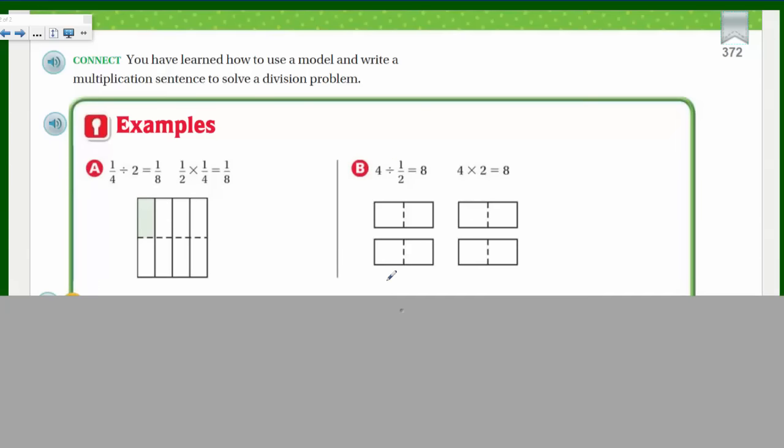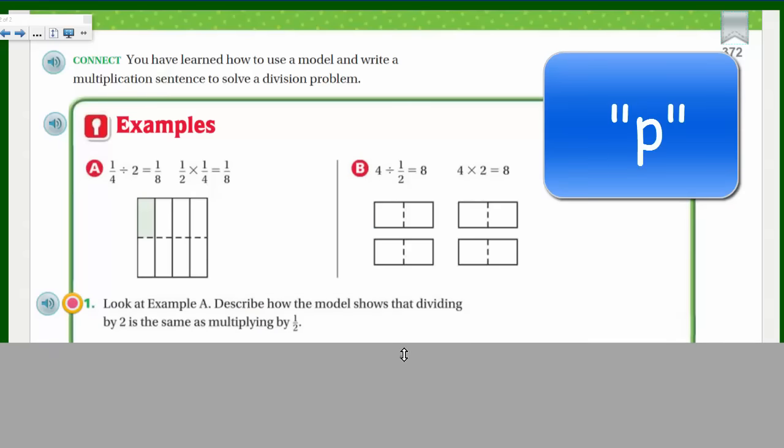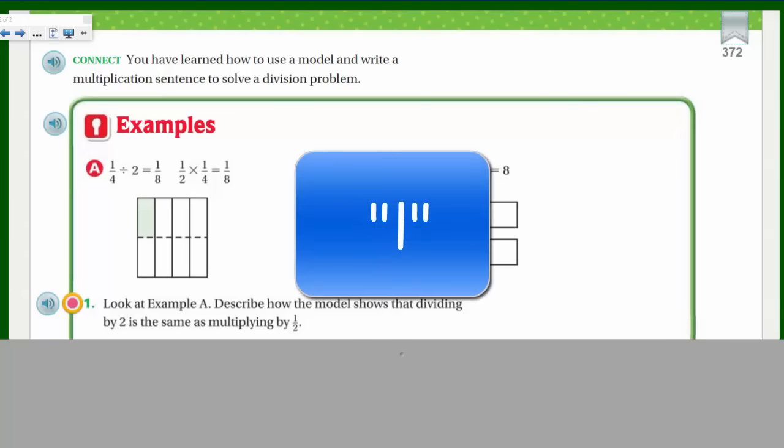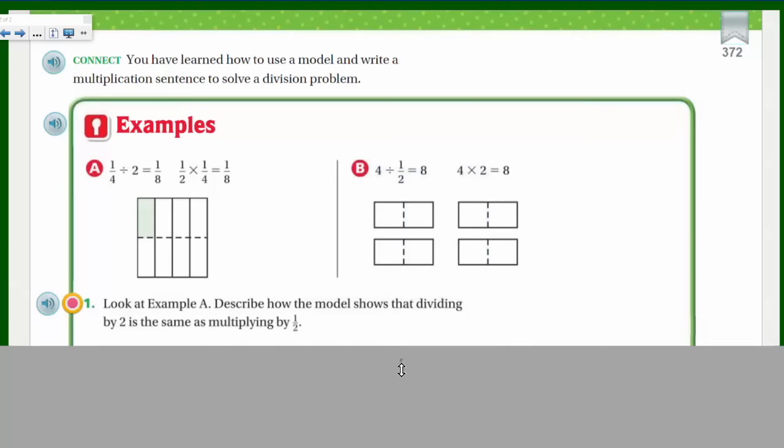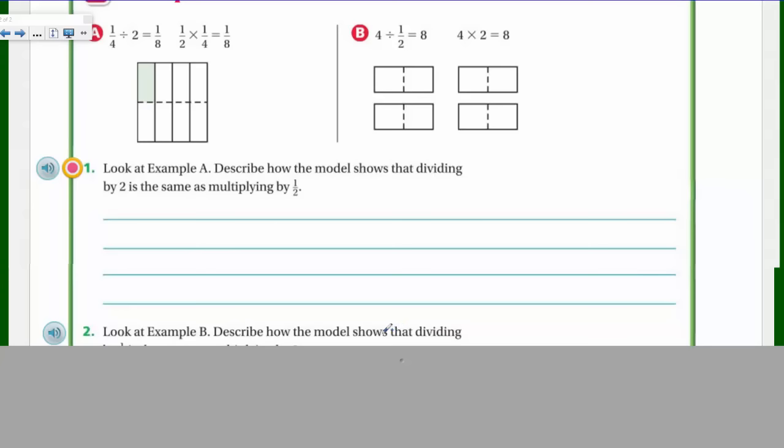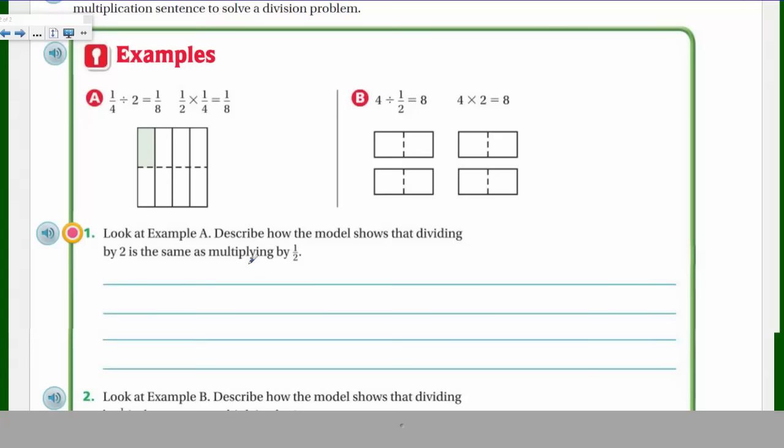One-quarter divided by two is equal to one-eighth. If you have a quarter and you're dividing it by two, yes, equals one-eighth. So one-half times one-quarter equals one-eighth. That's what we just did. Here we have four. These are more samples. Look at example A. I guess they just want us to see this. So we have four. Divided by one-half. So four times two equals eight. Look at example A.